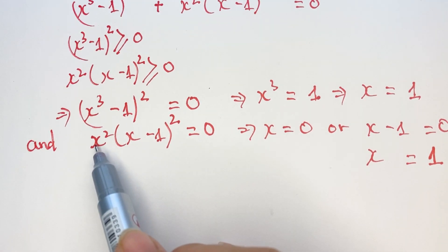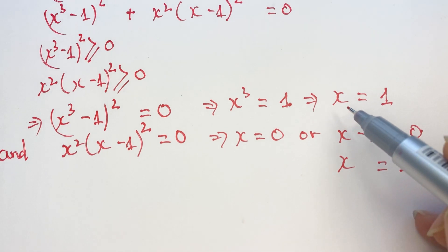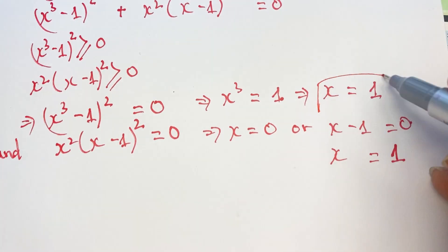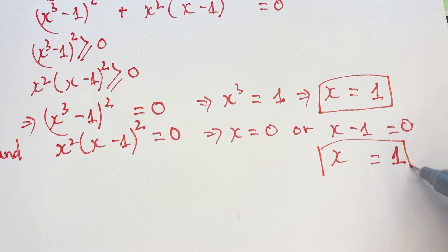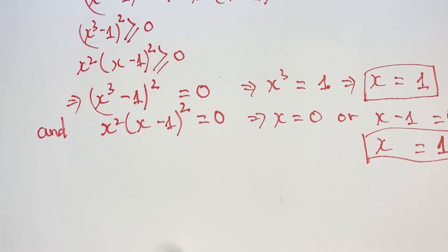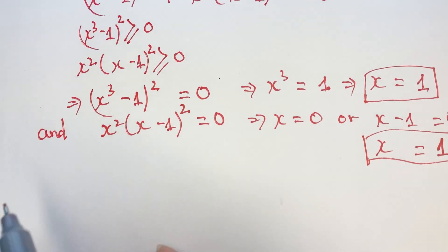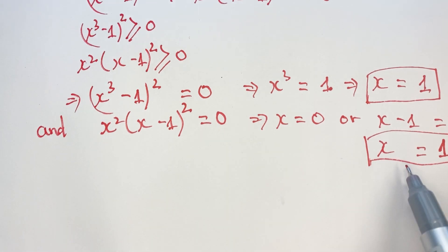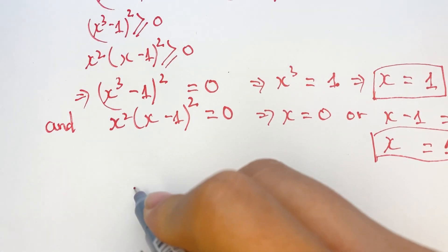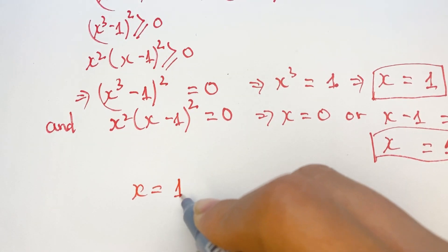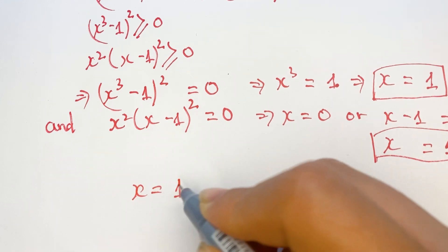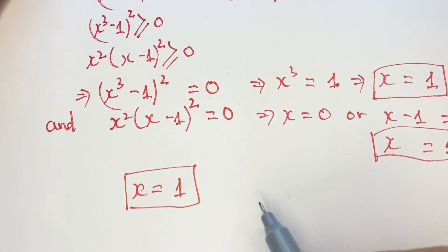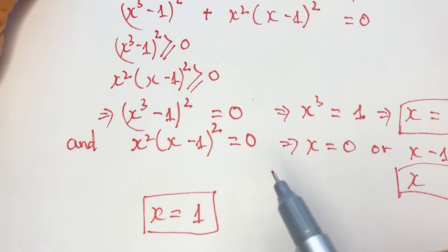You can see for the first equation and the second equation, we have the common value of x. x equals 0 is common to both. So the only possible solution is x equals 0. x equals 0 is the only solution for the equation above.